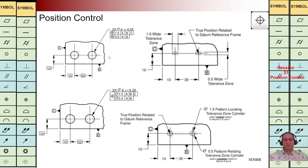We have datum plane A, B, C. A is this plane in front of us, we have B this plane, and C is this plane. As we can see here, we don't have the diameter symbol in the second box.